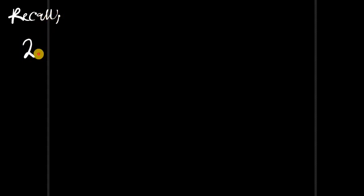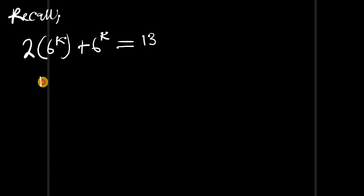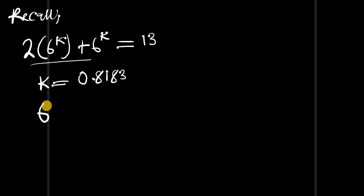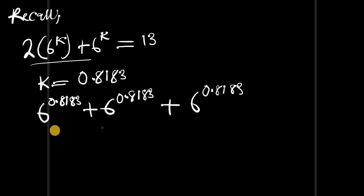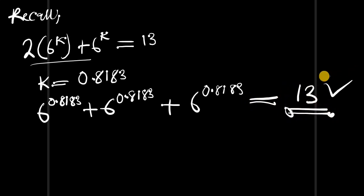Recall that we were given 2 times 6^k plus 6^k equals 13, and we discovered that k equals 0.8183. That means we can rewrite the left side as 6^0.8183 plus 6^0.8183 plus 6^0.8183. If you compute 6^0.8183 and add them together, you get an approximate value of 13. So that is it for the video — thank you and goodbye.